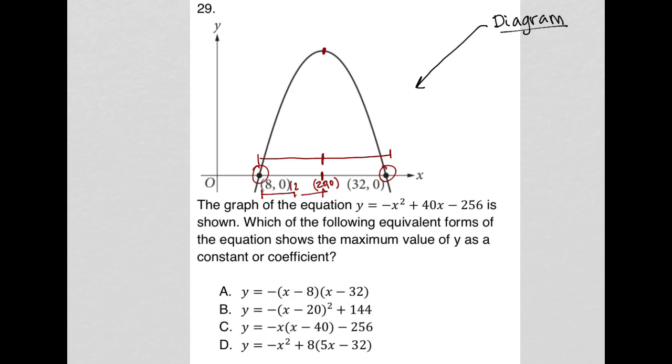So the question says the graph of the equation y equals negative x squared plus 40x minus 256 is shown, which of the following equivalent forms of the equation shows the maximum value of y as a constant or coefficient?